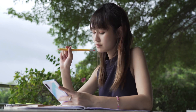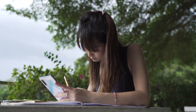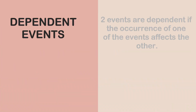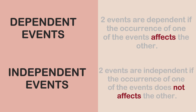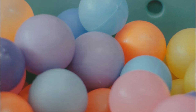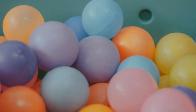Now let's talk about dependent and independent events. Two events are said to be dependent on each other if the occurrence of one event affects the occurrence of the other. Two events are said to be independent if the occurrence of one event does not affect the other.